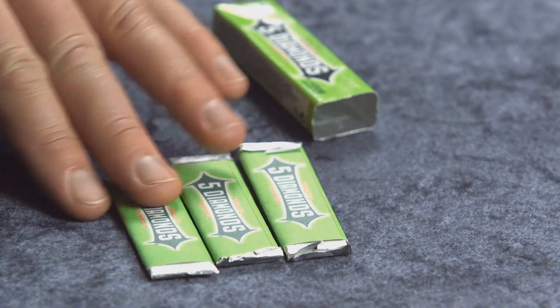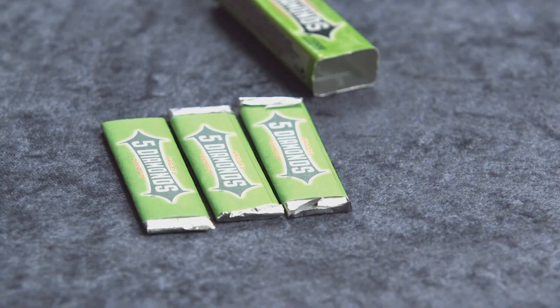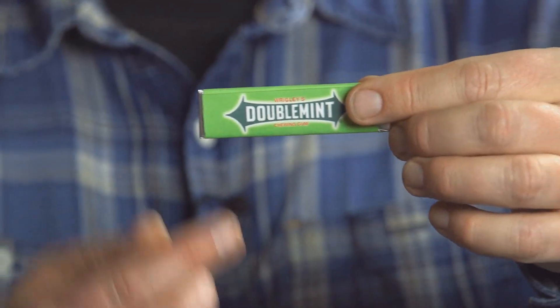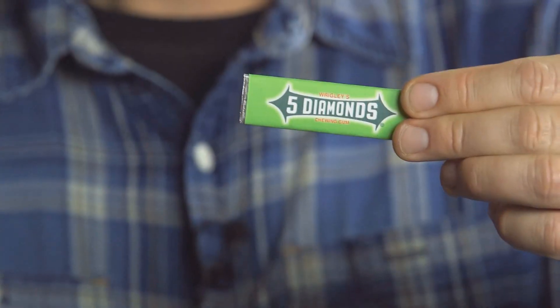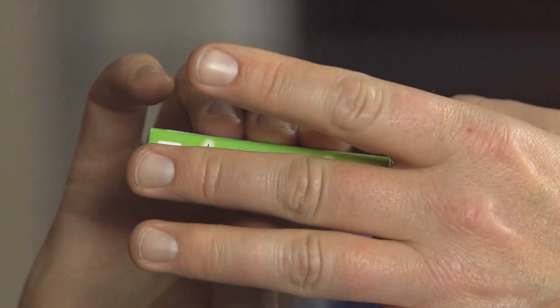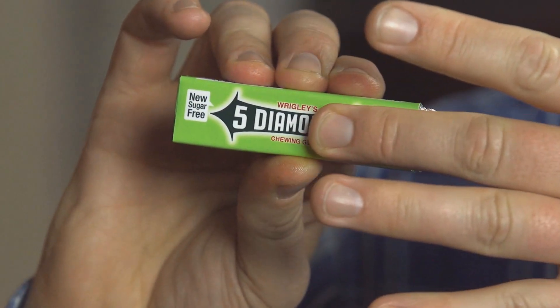You go through a simple card routine, have a card selected, returned to the deck, and then try to decipher what card the spectator picked. You then pull out a pack of gum, show both sides with the Doublemint logo, have them concentrate on it, and with a single finger wipe across the logo to transform it into their revealed card.